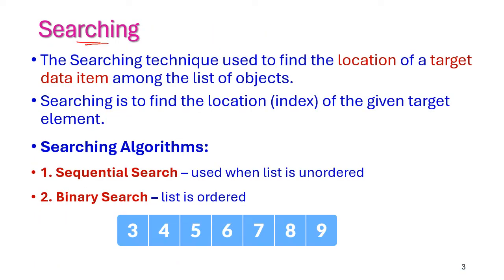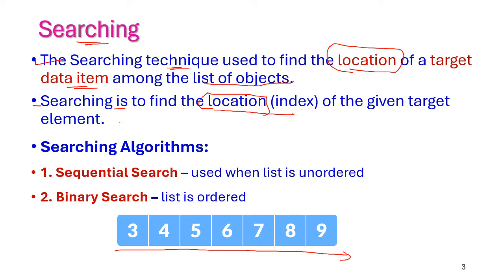First, let us see what is searching. Searching is a technique which is used to find the location of a given target data item among a list of data items. From the given data items, we need to find whether a particular data item is available in the list or not. For example, if we want to search whether 7 is available in the list, and the index starts from 0 to 6, the position of 7 is found at index 4. So that is called searching.